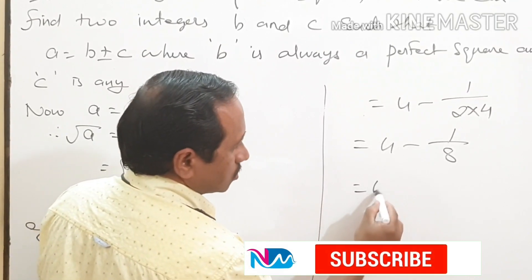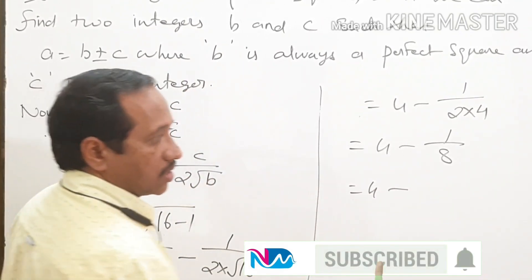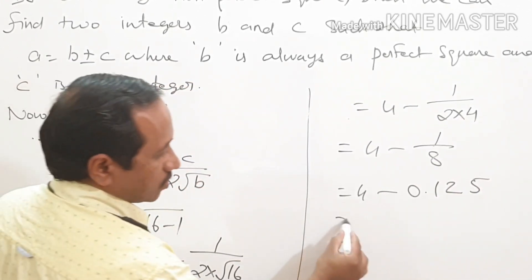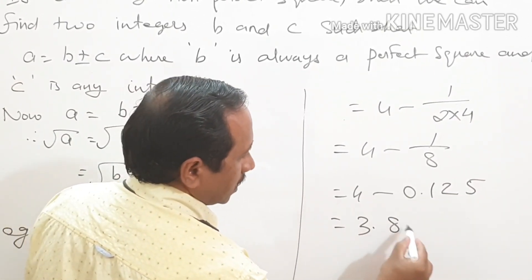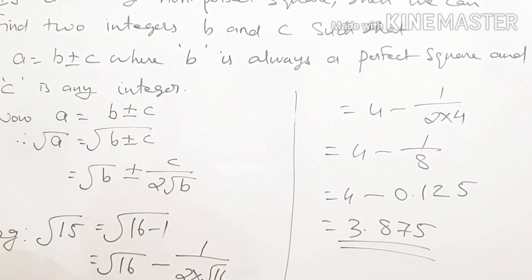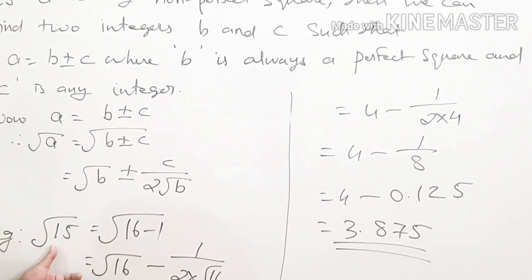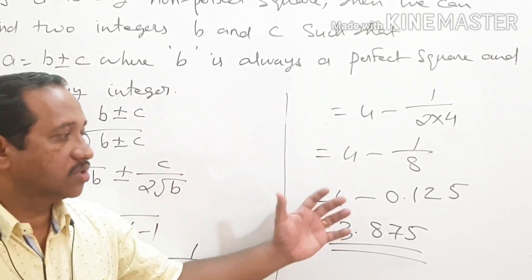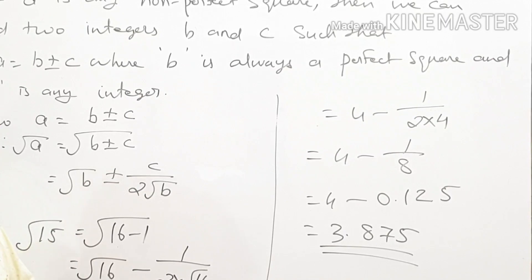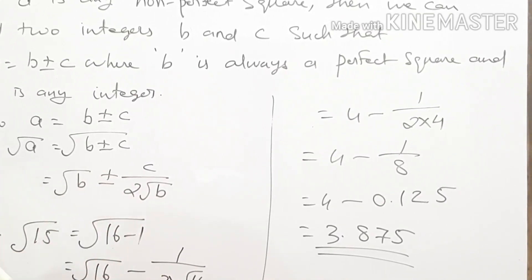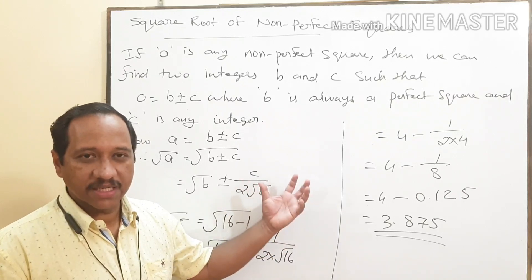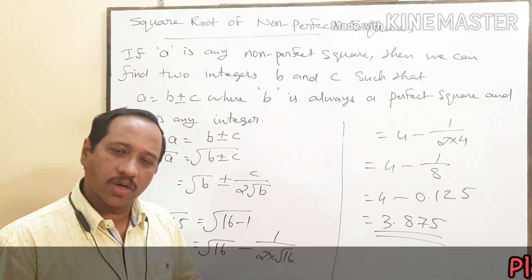That is equal to 4 minus 0.125, which is equal to 3.875. The square root of 15 is equal to 3.875. In this way, you can find the square root of any non-perfect square. I hope all of you understood this method of finding the square root of a non-perfect square.